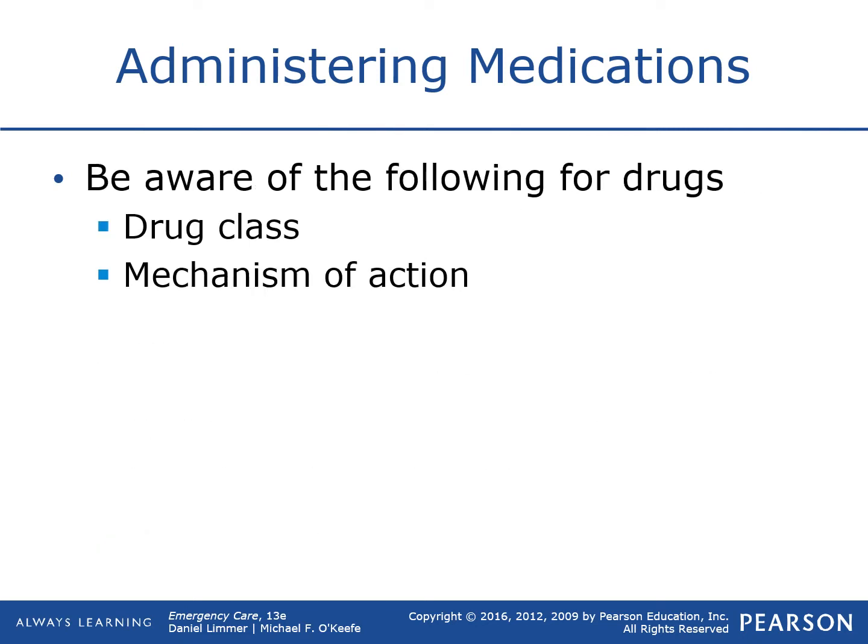Some terms you have to be familiar with when talking about drugs. First is the drug class — an umbrella category for drugs that do similar things in the body. For example, morphine and fentanyl fall under the opiate drug class. The second thing you have to be aware of is the mechanism of action — what is actually occurring in the body, what the drug is designed to do inside the body.